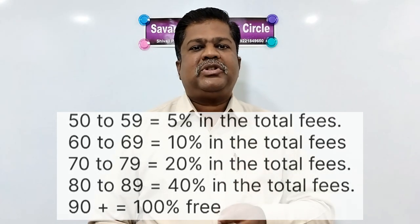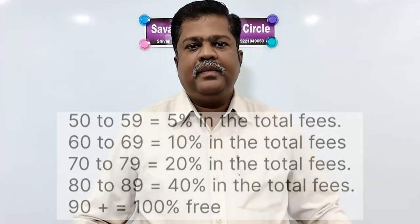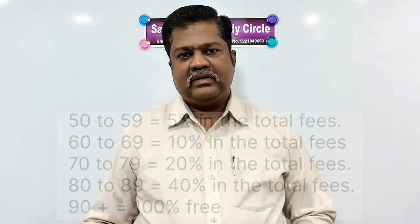The same scheme applies for CDS — Combined Defense Services — and NDA — National Defense Academy entrance test. Whatever marks you obtain in the Preparatory Batch, you must first obtain a minimum of 25%, and above 50% concessions start in the same fashion. This is how we conduct our batches. The Preparatory Batch is one month in duration.